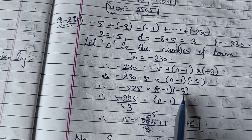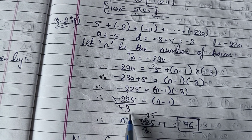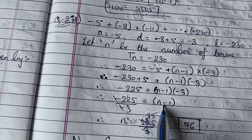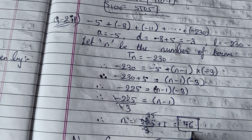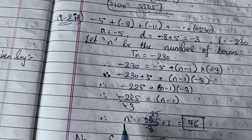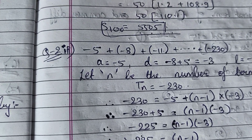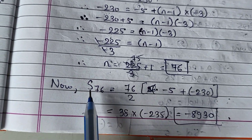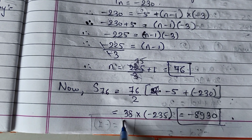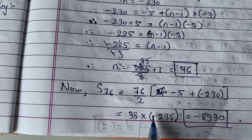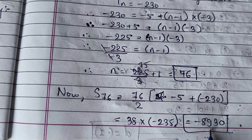Dividing −225 by −3, the negatives cancel to give 75, but we have N−1, so N = 75 + 1 = 76. Now with N = 76, we find S76 = 76/2 × (2A + (N−1)D) = 38 × (−235) = −8930. That is your answer.